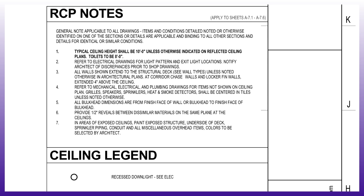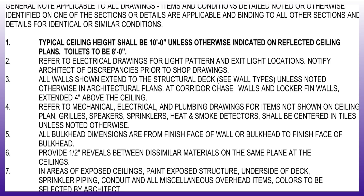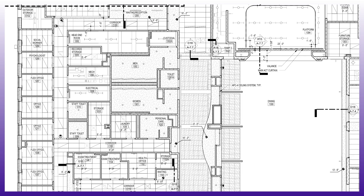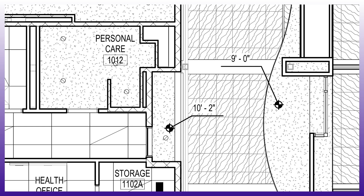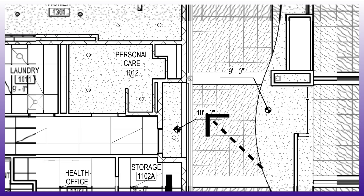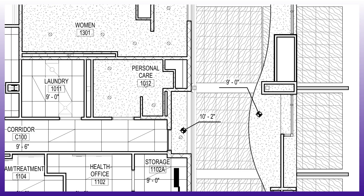Taking number one here, it says typical ceiling heights shall be 10 foot, unless otherwise indicated on reflected ceiling plans, and the toilets to be at 8 feet. This little symbol here establishes what the ceiling height is for a given area. Here it says it's 10 foot 2 inches, and same could be said for this area here — it's 9 foot.